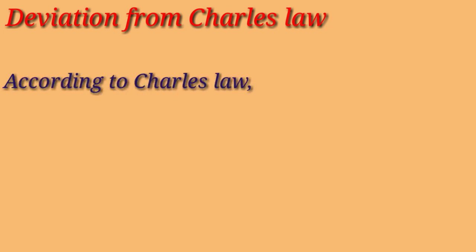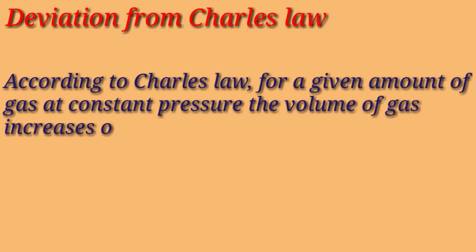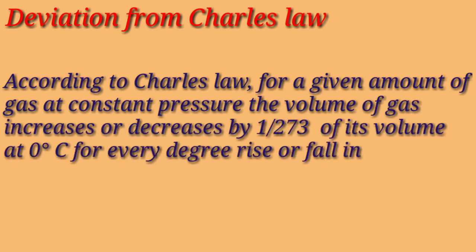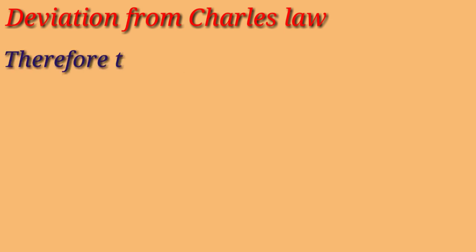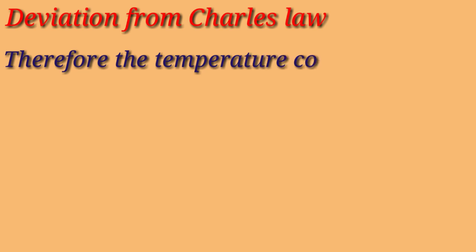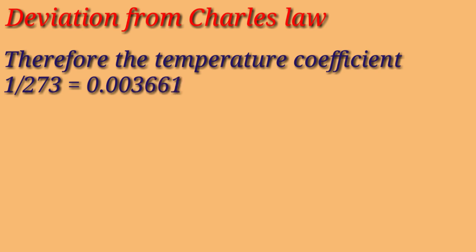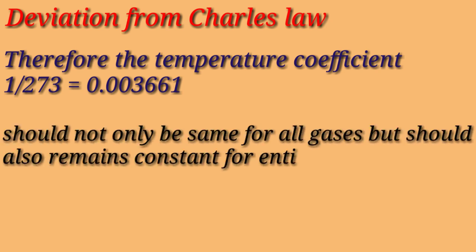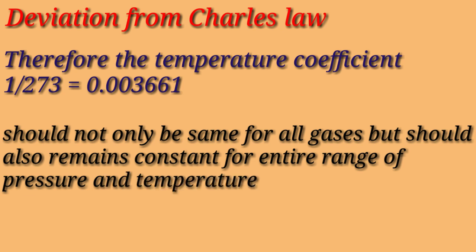Next is deviation from Charles' law. According to this law, at constant pressure, the volume of a given mass of a gas increases or decreases by 1/273rd of its volume at 0°C for every degree rise or fall in temperature. Thus the coefficient of increase or decrease in volume for all gases should be 1/273, that is 0.003661, and should remain constant for the entire range of pressure and temperature.